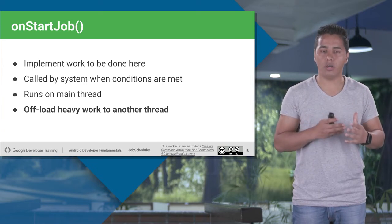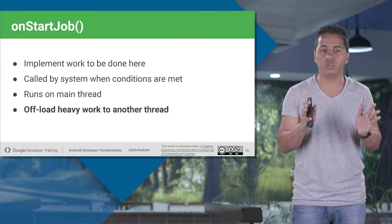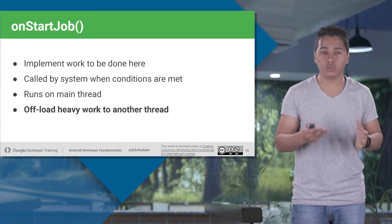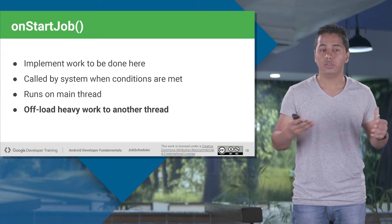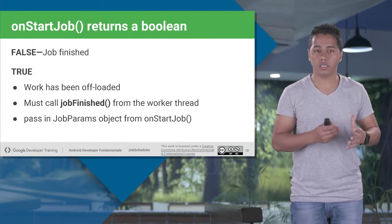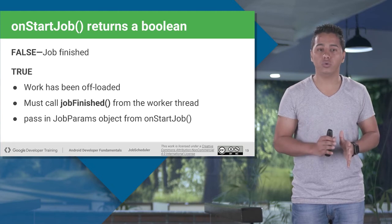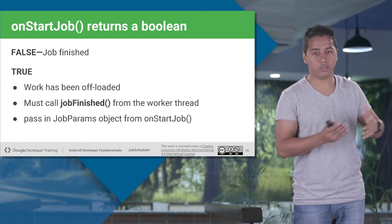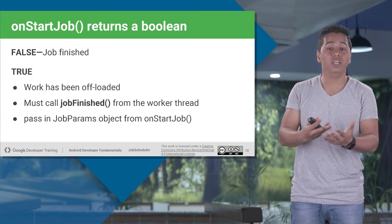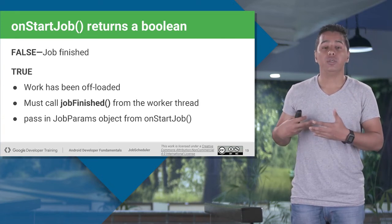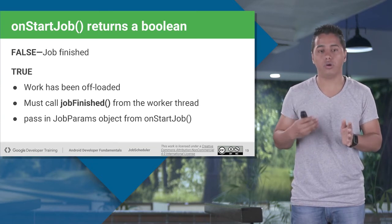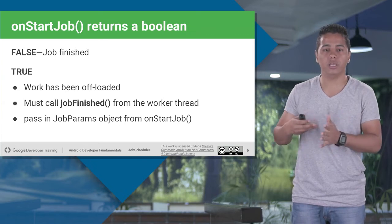OnStartJob will only get initiated if all the conditions defined for your Job Scheduler are met — such as the device being charged or connected to Wi-Fi. It returns a Boolean: false when the job is finished, and true when work has been offloaded to a different thread. From that worker thread, you have to call JobFinish. Until you call JobFinish, your JobService will not know that your job has been finished. You call JobFinish and pass the Job object as a parameter.